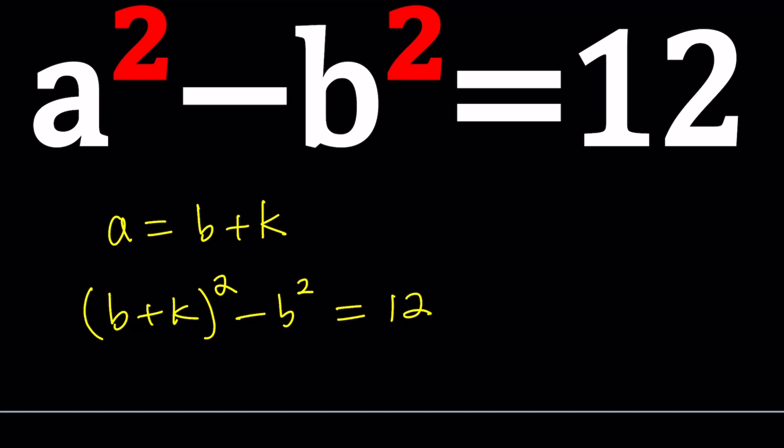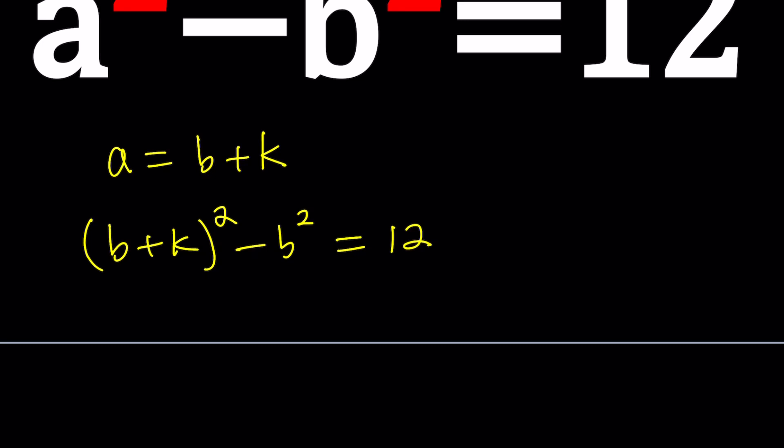For those of you who are not familiar with the difference of two squares, it's just going to give you a different identity. Here we're going to get b² + 2bk + k² - b² = 12. And then we can go ahead and cancel out the b².